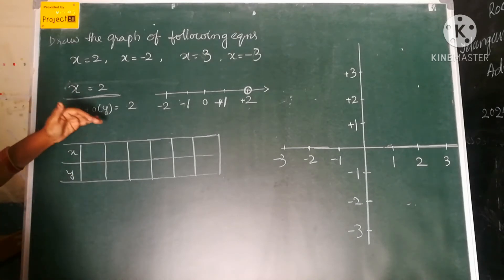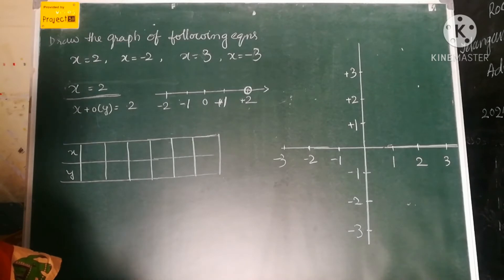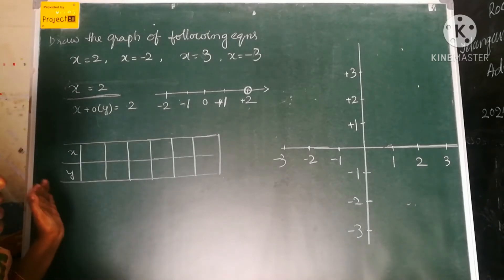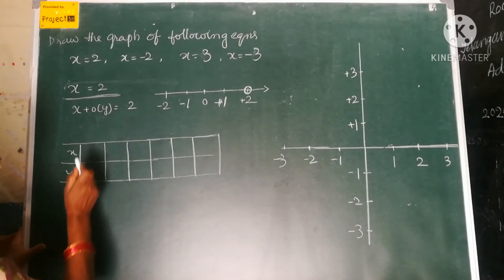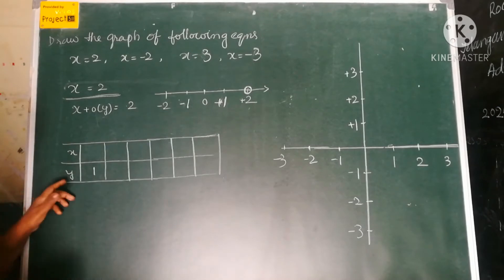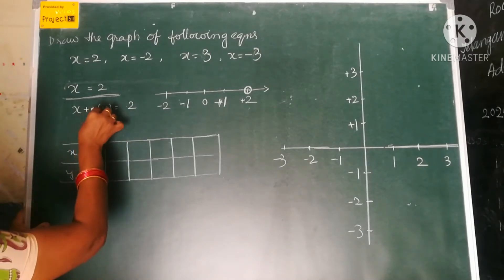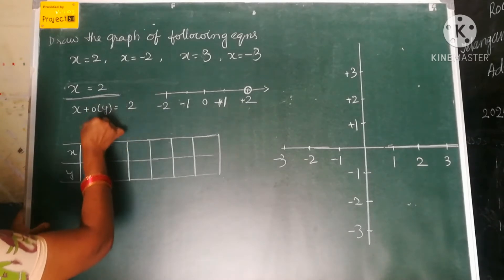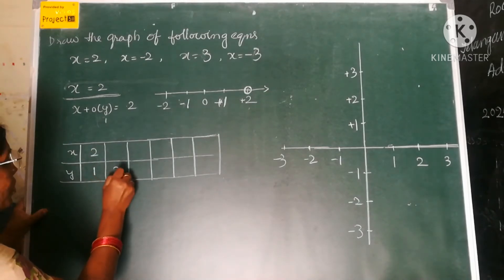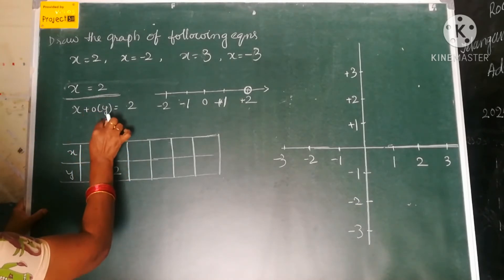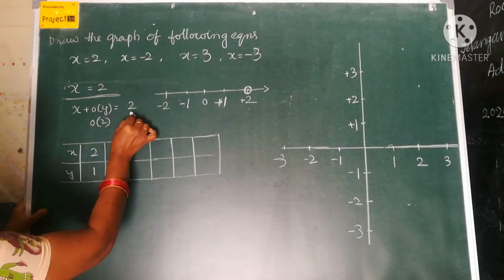Now let us make y independent and give values to y so that we get the values for x, and represent this on the graph paper. I am taking y equal to 1. If I place y equal to 1, it is 0 multiplied by 1, which gives 0. So x is equal to 2. In the same way, if I give y equal to 2, that is 0 into 2, which is 0. So we get x equal to 2 again.